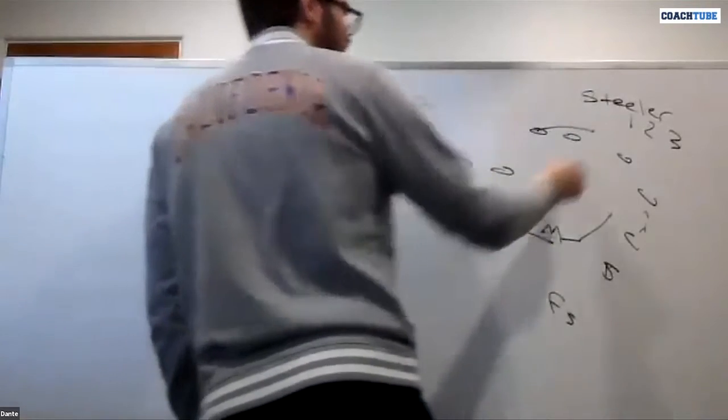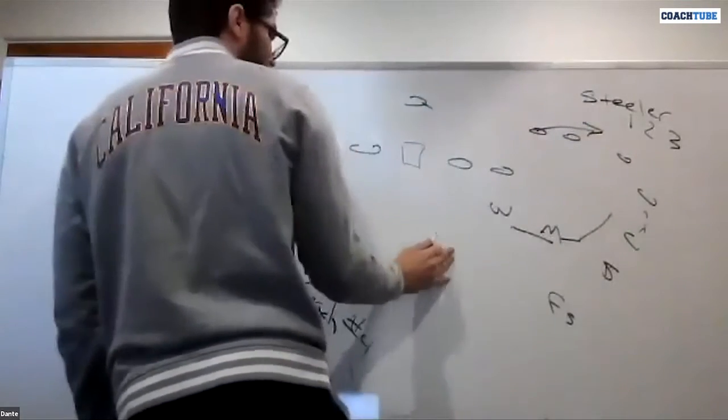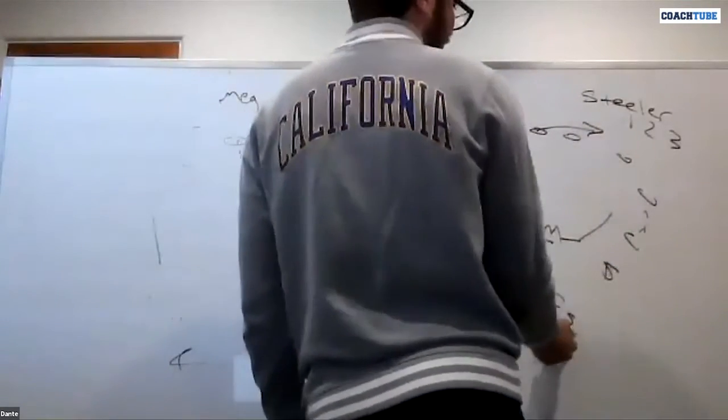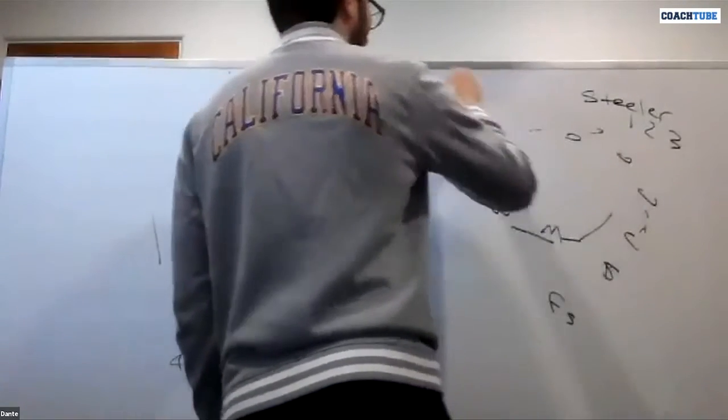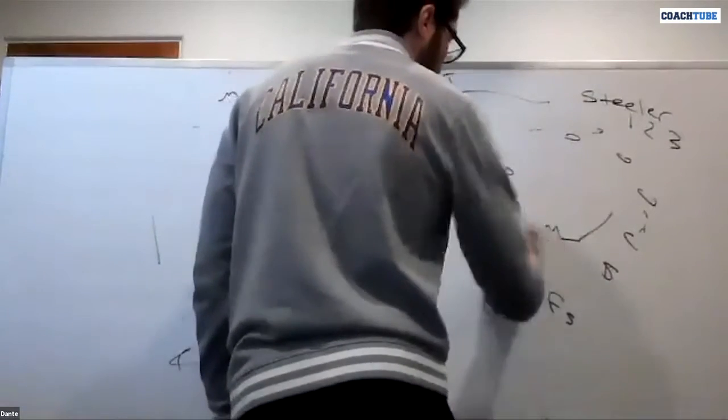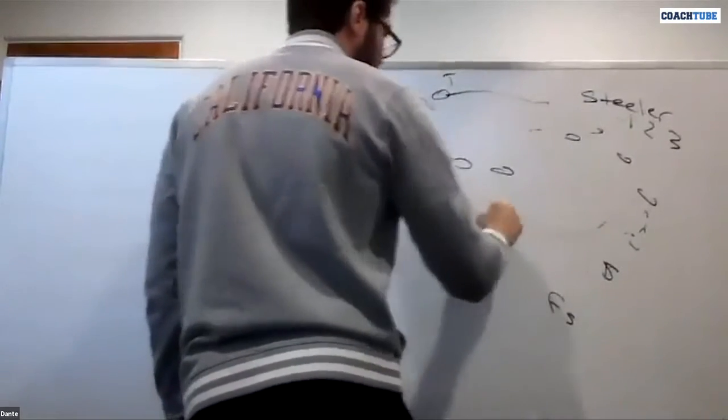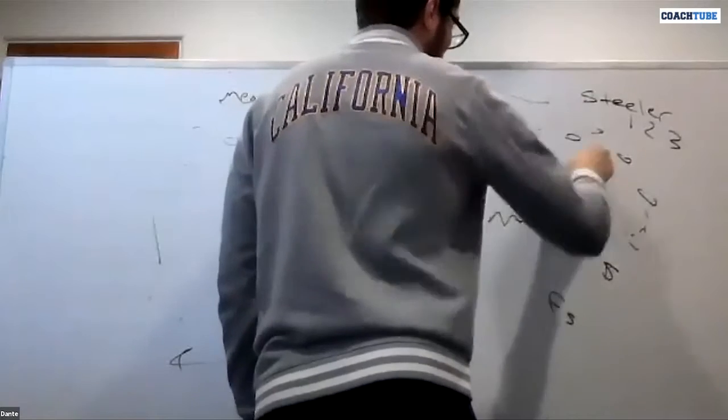If four's fast we're going to push it between the mic and the will. Strong safety is not involved, free safety is not involved, corner is not involved. So same thing if we get a fast four coming out of the backfield, we get that, we will push it between the will and the mic.